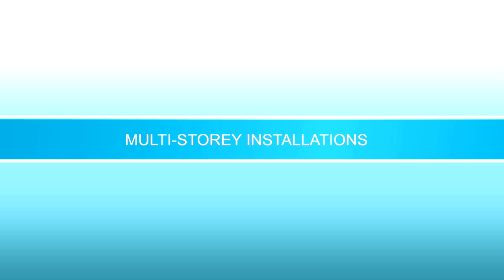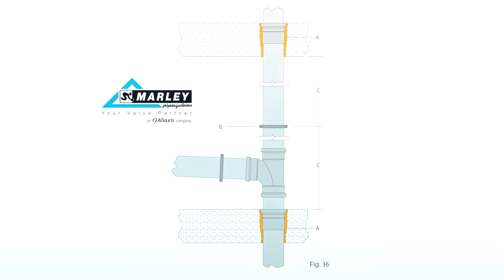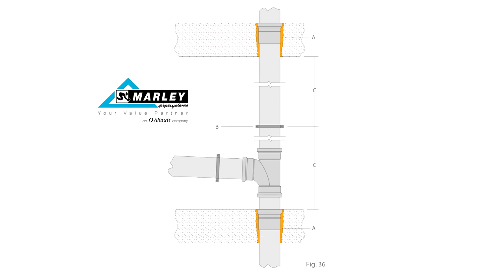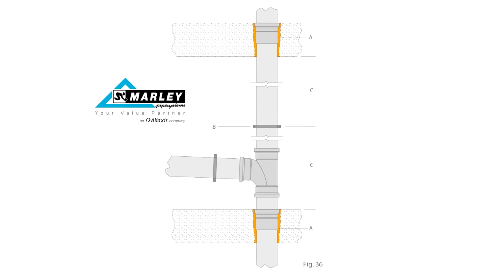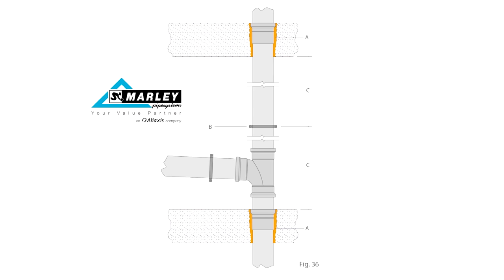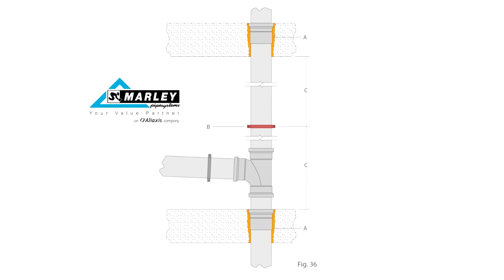In buildings that are 30 meters or more in height, pipe movement under temperature changes should be controlled at each floor. This can be done by securing at least one socket with a pipe clip at each floor.